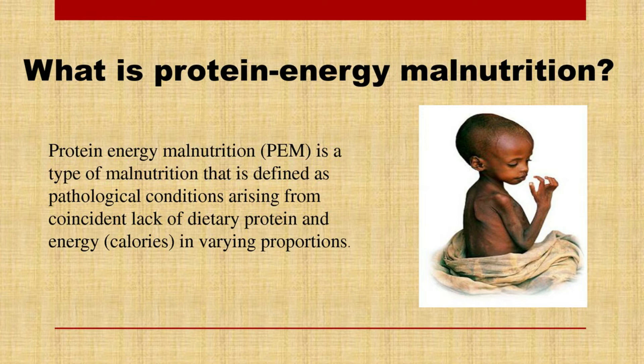Children who are thin for their height may be suffering from acute PEM, which is recent severe food deprivation. Whereas children who are short for their age have experienced chronic PEM, which is long-term food deprivation. Poor growth due to PEM is easy to overlook because a small child may look quite normal, but it is the most common sign of malnutrition.